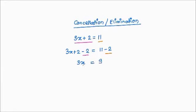Now I am looking for x, so I want to keep x intact but remove anything else with it. There is a 3 multiplying x, so I will divide both sides by 3. 3x ÷ 3 on the left cancels the 3, leaving just x. On the right, 9 ÷ 3 = 3. So we get x = 3.